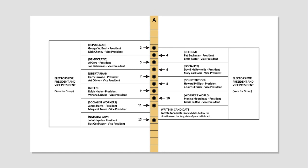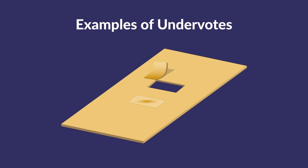Problems arose because at the time, the Florida voter was to use a stylus to punch a hole in the ballot next to the name of the voter's preferred candidate. The counting machines would reflexively reject — that is, not include in the final count — any ballots that they couldn't read or that otherwise failed to conform to applicable rules. Such rejected ballots were referred to as undervotes.